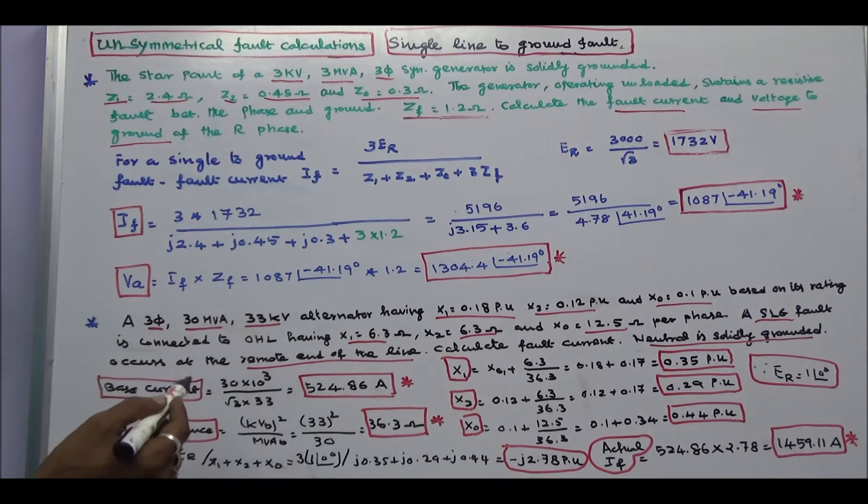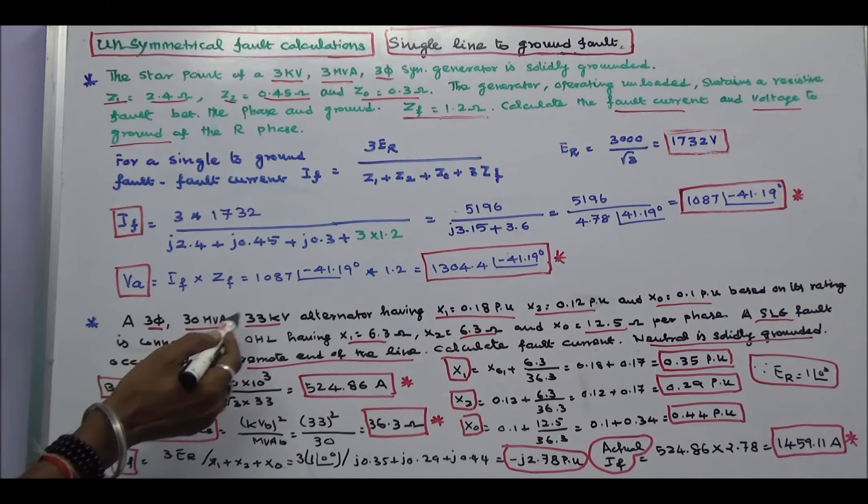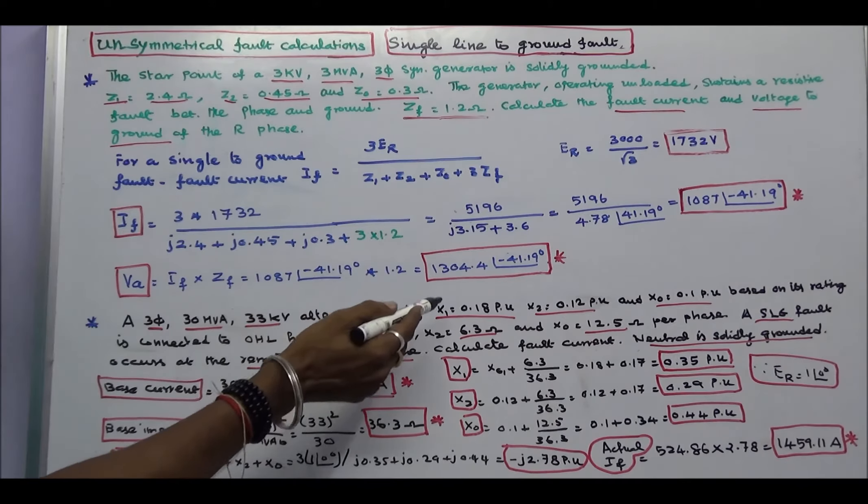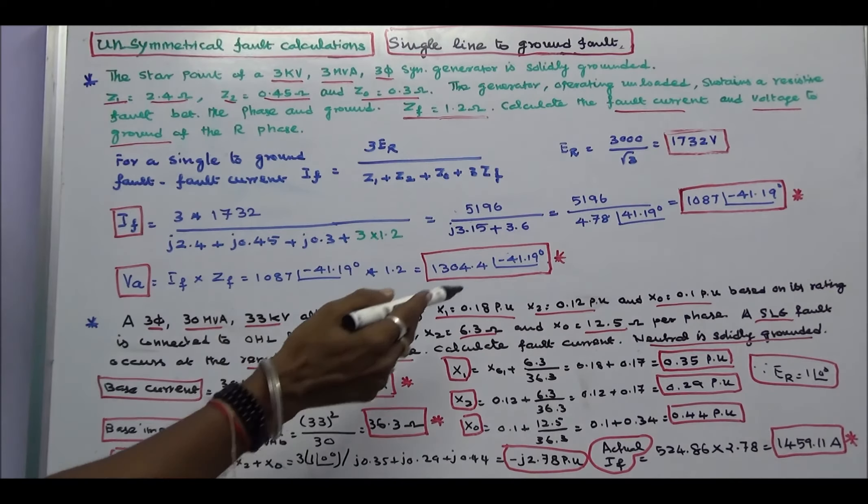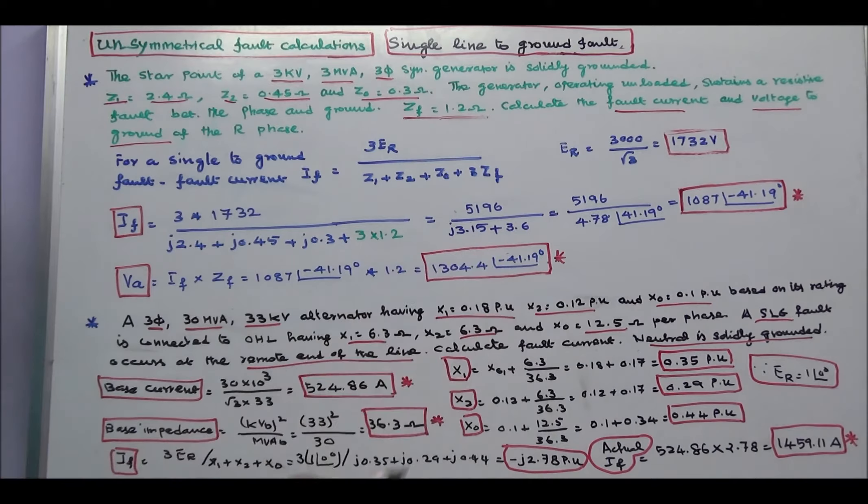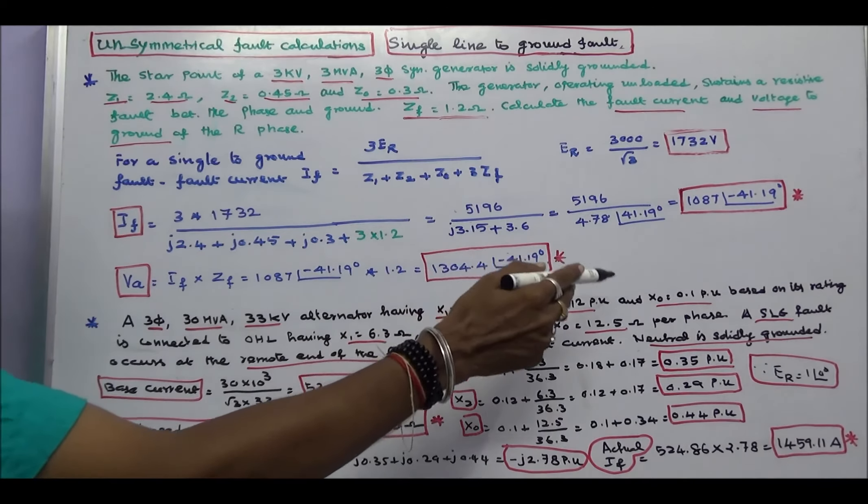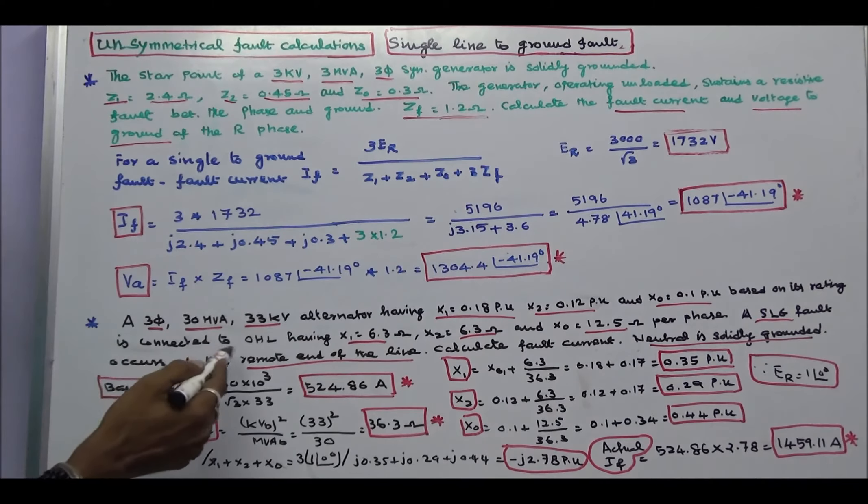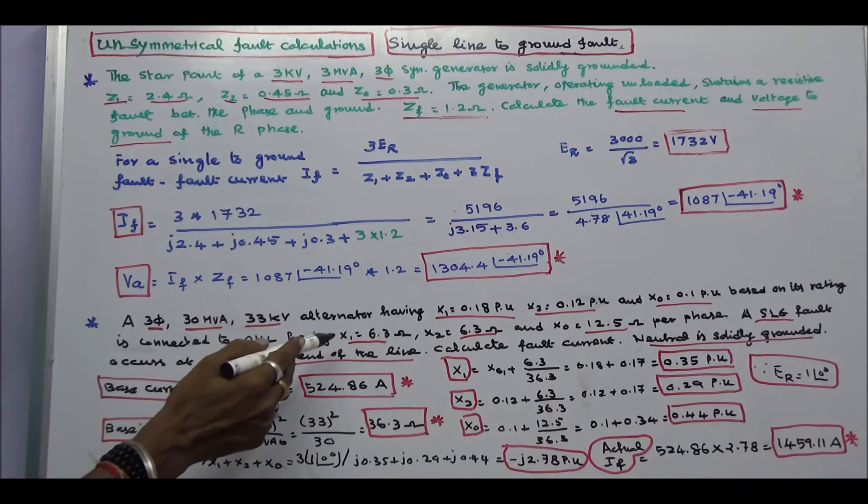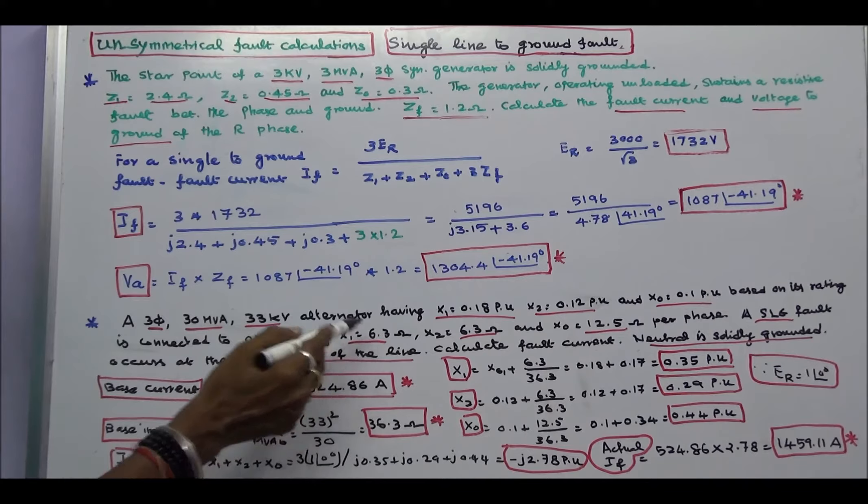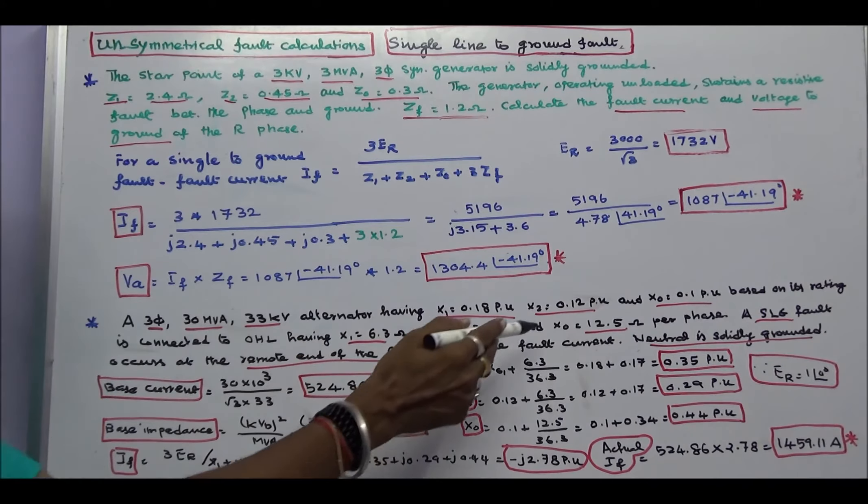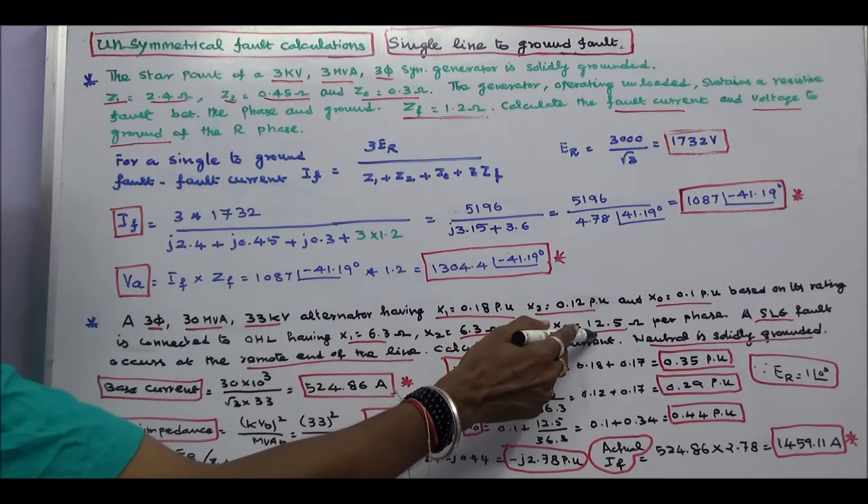The second problem is a 3 phase 30 MVA 33 kV alternator having X1 is equal to 0.18 per unit, X2 is equal to 0.12 per unit, and X0 is equal to 0.1 per unit based on its rating, is connected to overhead line having X1 is equal to 6.3 ohms, X2 is equal to 6.3 ohms, and X0 is equal to 12.5 ohms per phase.